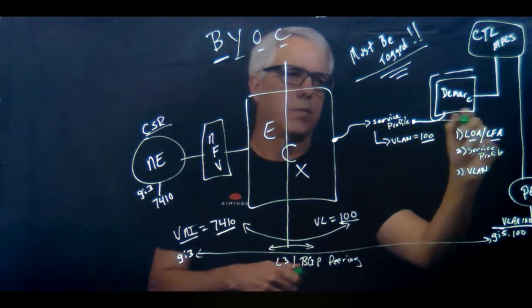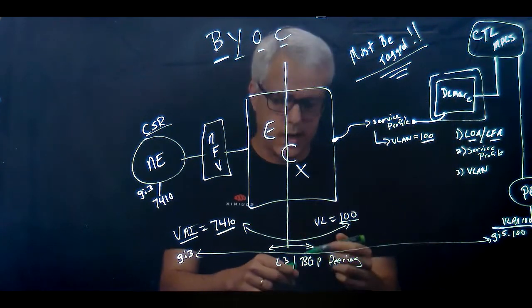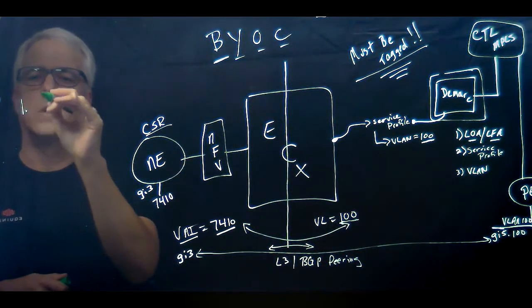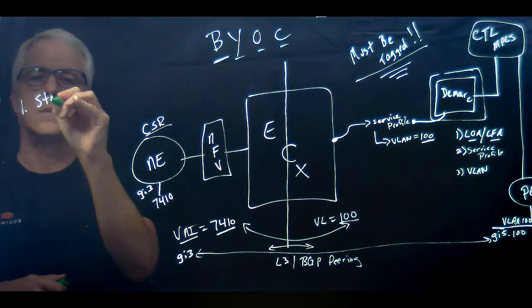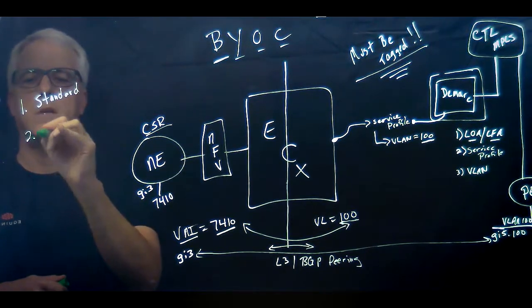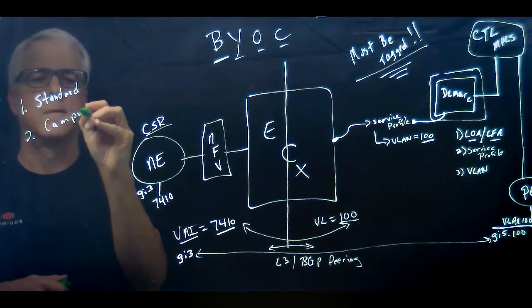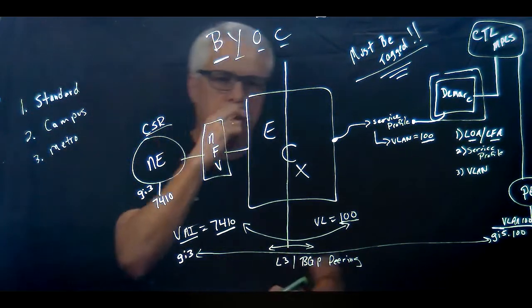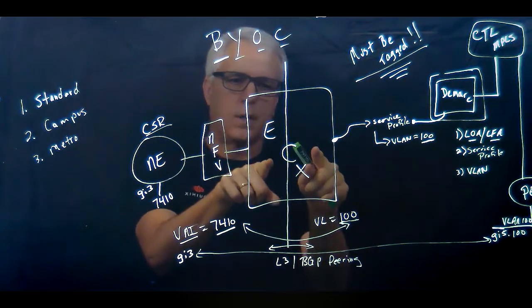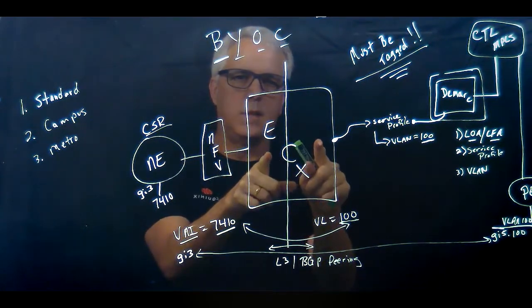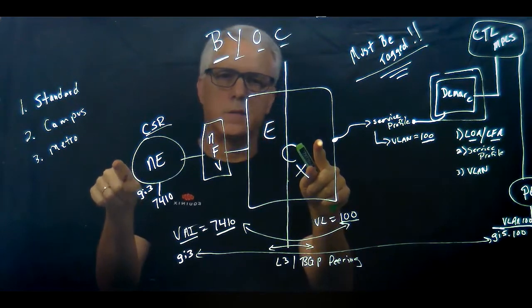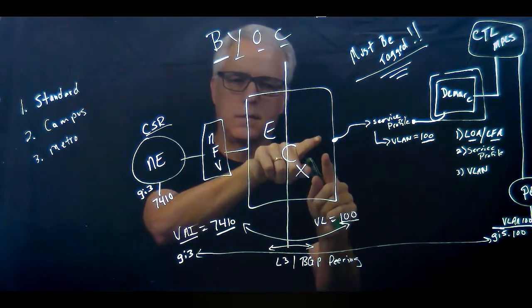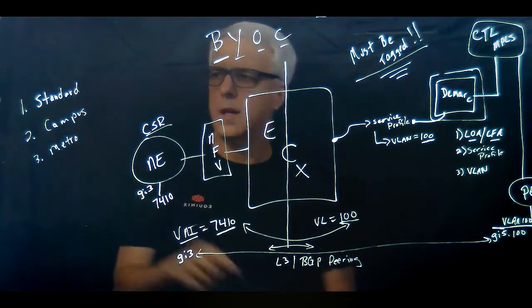Last question we get asked a lot: customer will ask us which ECX do we order to? My rule of thumb is always go in this order: standard cross connect, campus cross connect, and metro cross connect. You want to figure out the location relative to the ECX switch, not where network edge is deployed, because the connection is going to be terminated on the ECX switch.